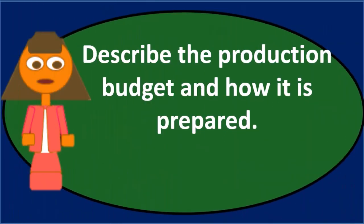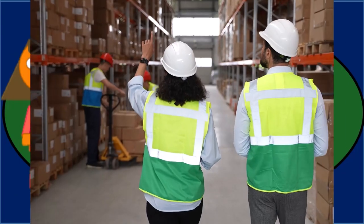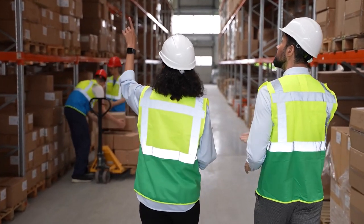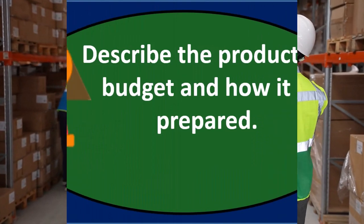First, the sales budget, which allows us to move forward to the production budget, getting the number of units that we expect to produce.